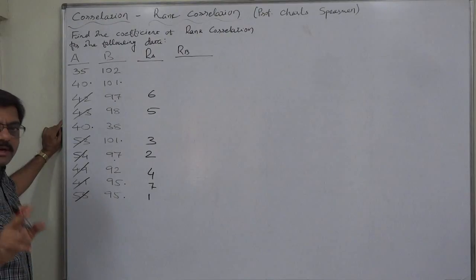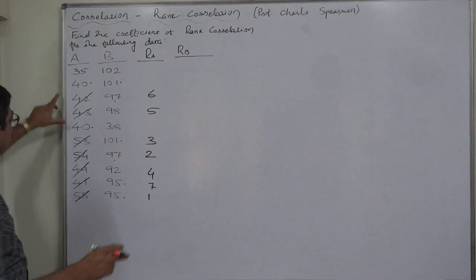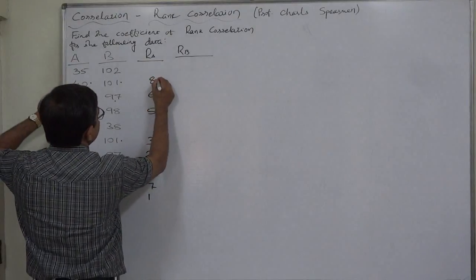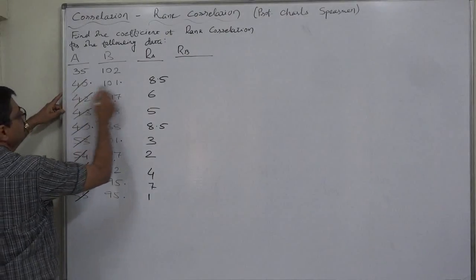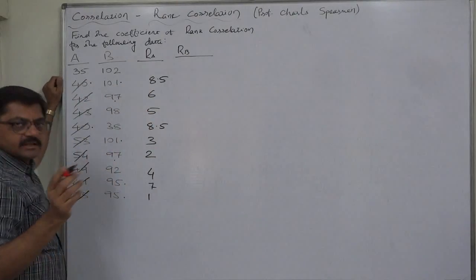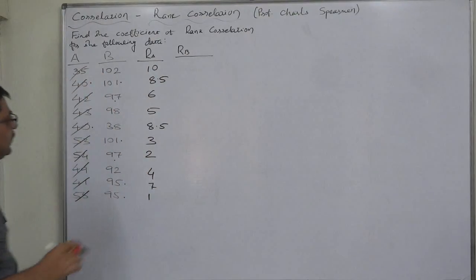8 plus 9, 17 divided by 2, 8.5. So rank 8.5 will be assigned to 40 at these two different places. This is the new thing and we have already used rank 8 as well as 9. 10 will be assigned to 35, the smallest value in A.